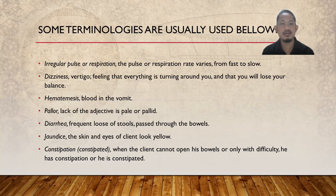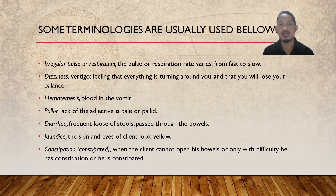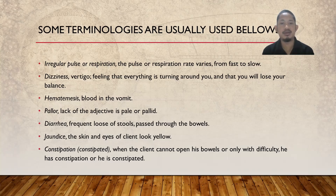Next, hematemesis or blood in the vomit. Jadi muntah darah — pada saat kita muntah ada darah. Bahasa Inggrisnya adalah hematemesis, yaitu darah pada muntah. Berikutnya istilahnya adalah pallor — lack of color; the adjective is pale or pallid. Jadi pallor itu artinya pucat; kata sifatnya adalah pale atau pallid.